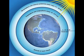Stratospheric ozone, sometimes referred to as good ozone, plays a beneficial role by absorbing most of the biologically damaging ultraviolet sunlight, called UVB, allowing only a small amount to reach the Earth's surface. The absorption of the ultraviolet radiation by ozone creates a source of heat, which actually forms the stratosphere itself.